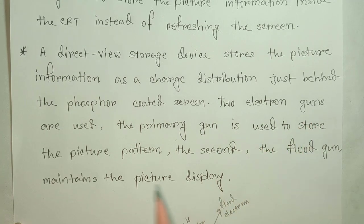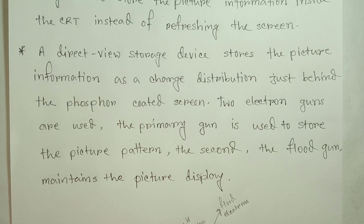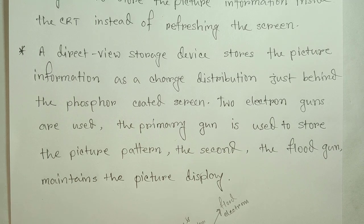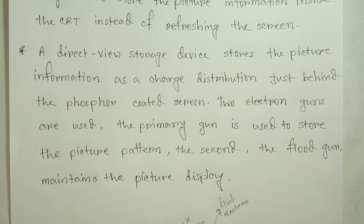Two electron guns are used. The primary gun is used to store the picture pattern, which is used to store the picture information.